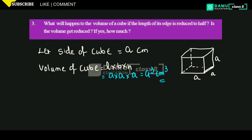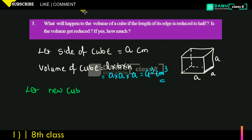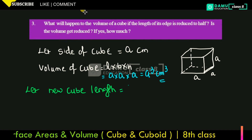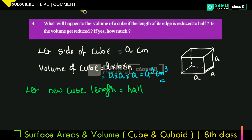So what we have to find here is what will happen if the edge is getting reduced. Let the new cube length be equal to half of the previous one — that is, half of A, so A by 2.